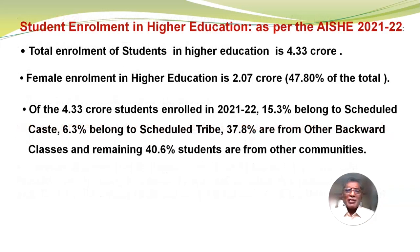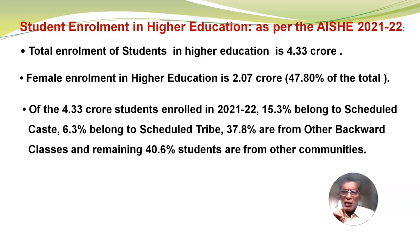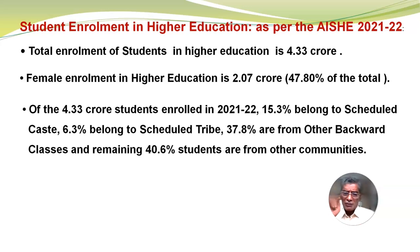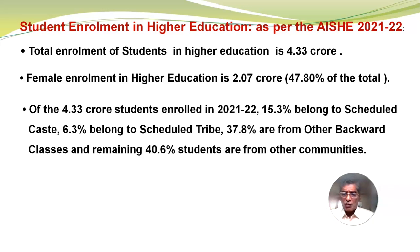Regarding student enrolment in higher education, as per the AISHE All India Survey 2021-22, total enrolment of students in higher education is 4.33 crore. Female enrolment is 2.07 crore, that is 47.8% of the total. Of the 4.33 crore students enrolled, 15.3% belong to Scheduled Caste, 6.3% belong to Scheduled Tribe, 37.8% are from Other Backward Classes, and the remaining 40.6% are from other communities.